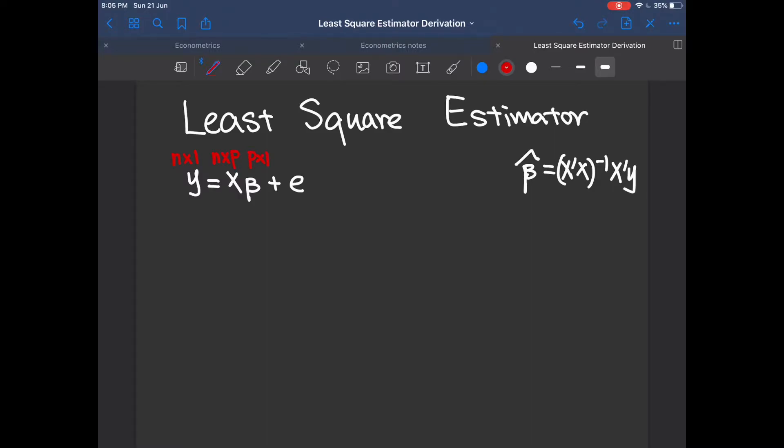We call beta the parameters or regressors. And e here is the error term with a dimension of m by 1.